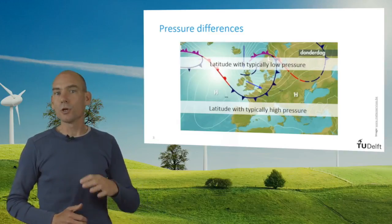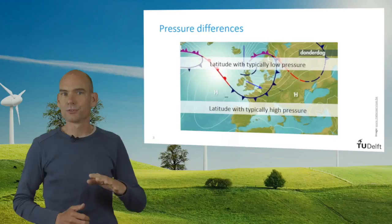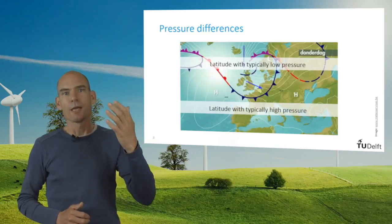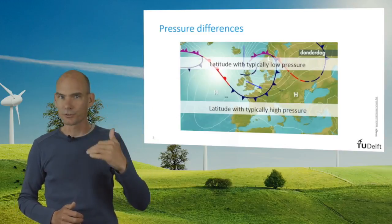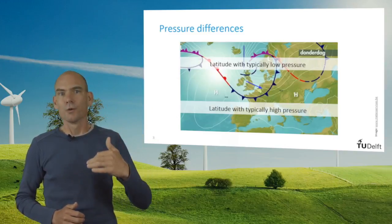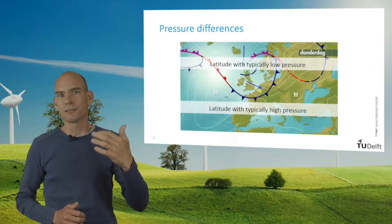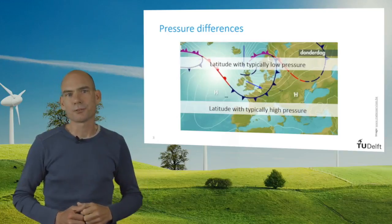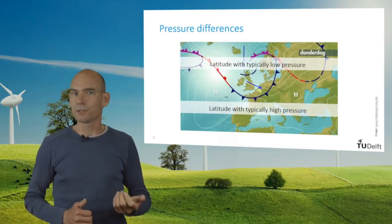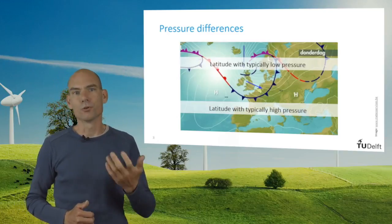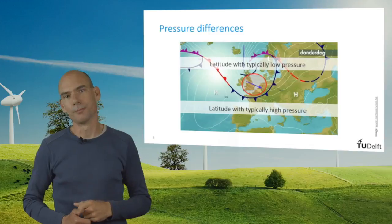Because the low pressure regions are in the north and the high pressure regions are in the south, we will see that this causes patterns with mainly westerly winds in northwest Europe.